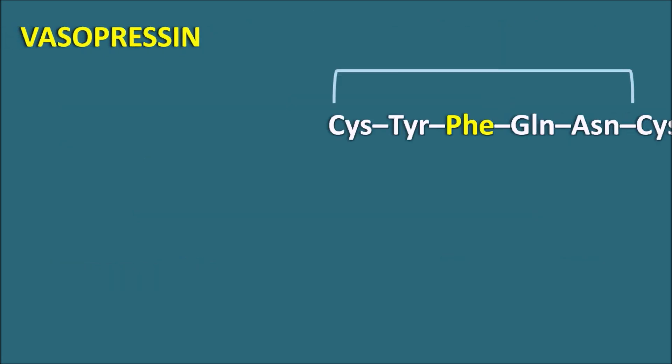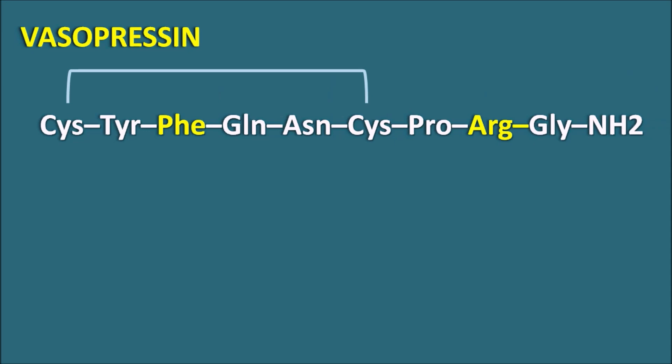Vasopressin is a nonapeptide having a specific amino acid sequence, and this peptide has an internal disulfide bridge between two cysteine amino acids. Counting the amino acids, there are a total of nine amino acids, so it is a nonapeptide.